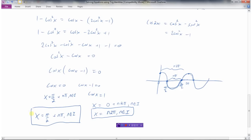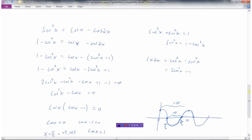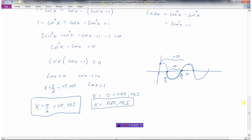So these would be all of the solutions to this equation that we started with up at the top here: sin²x = cos x - cos 2x. And so, again, nothing really new here. We're still just solving trig equations, but we're using some identities to enable us to solve it.